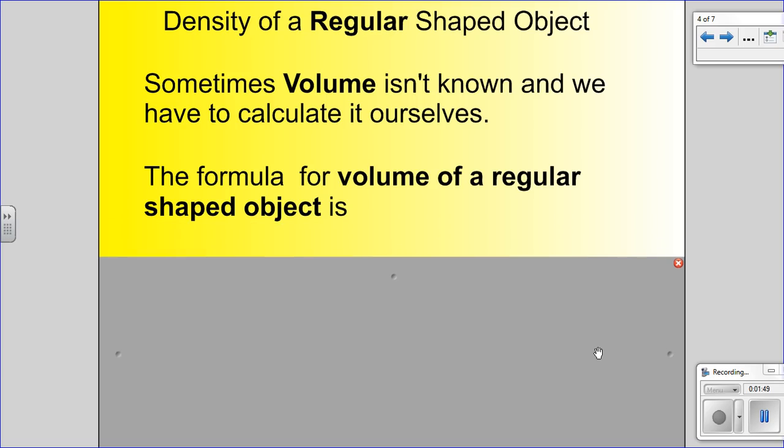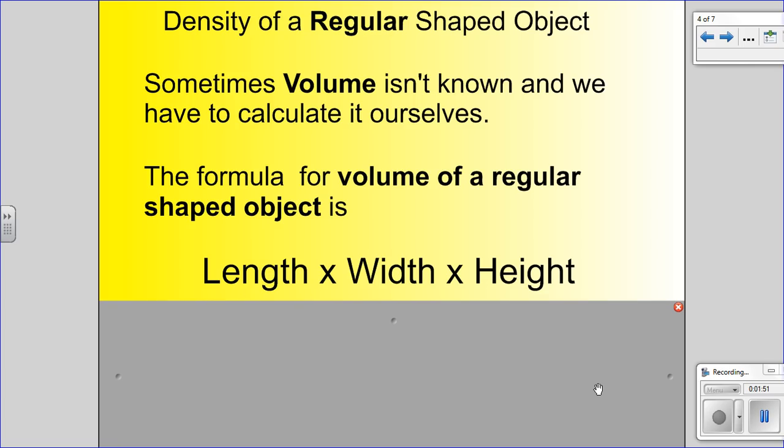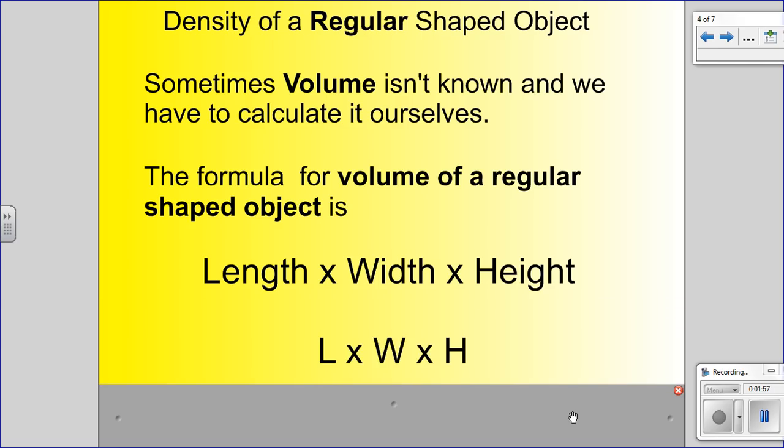The formula for a regular shaped object is length times width times height. You may also see it written like this: L times W times H. This formula is something that you're just going to have to memorize. Length times width times height is the formula for a regular shaped object.